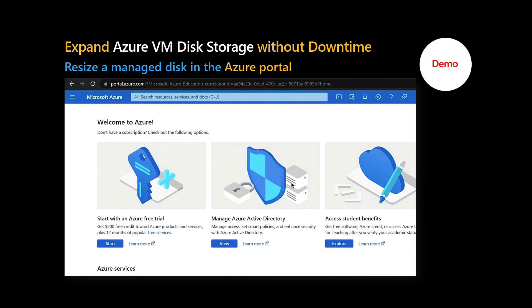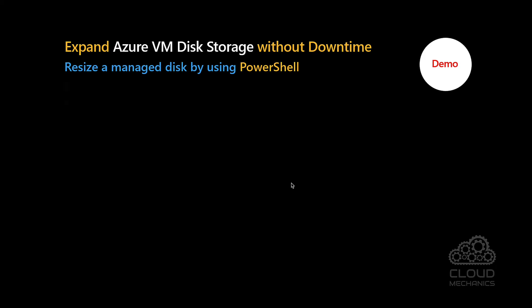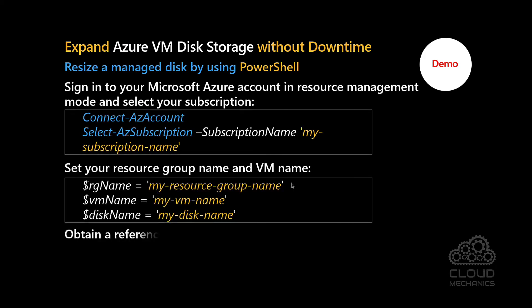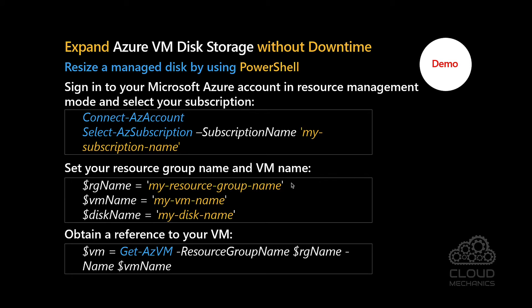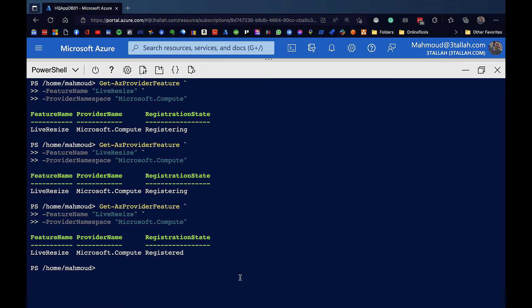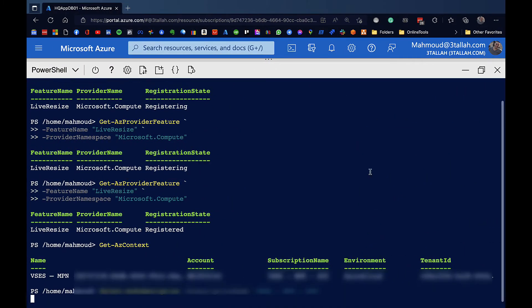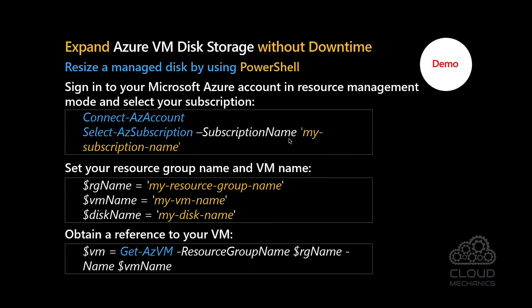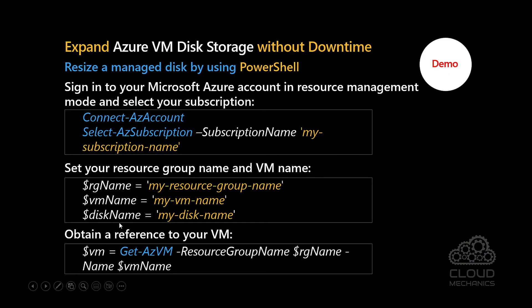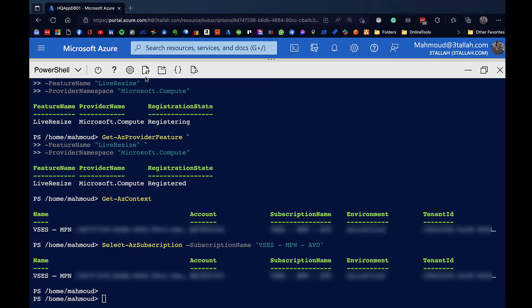Our next action will be resizing our managed disk using PowerShell. We jump back to the portal and open the PowerShell interface. We start by selecting our subscription to validate we are on the right one, and then we set our resource group name, virtual machine name, and disk name variables to run the update against them.